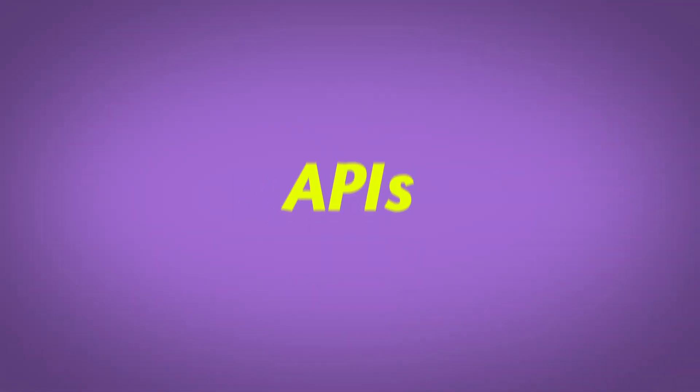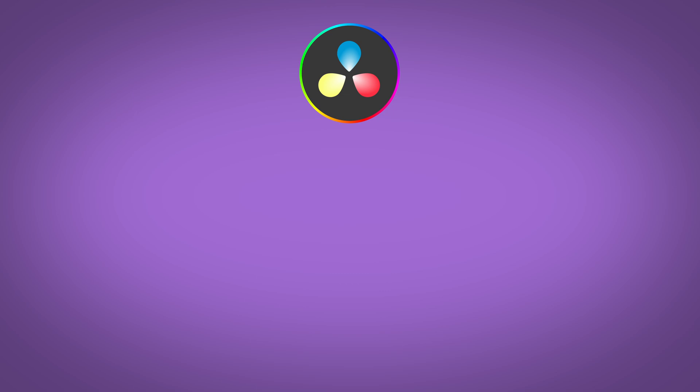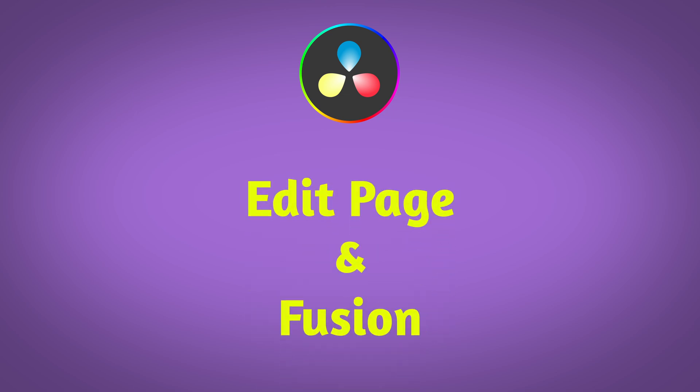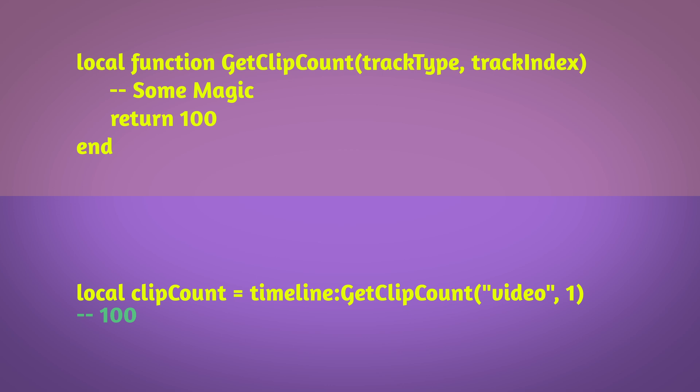What about APIs? An API is essentially just a way for you to connect to a website or software. In our case, DaVinci Resolve allows you to connect to it to do various tasks like things on the edit page, in Fusion, and other things. You use a function the creator of the software gives you, pass in data like numbers, strings, or booleans, and it will perform tasks that you couldn't do with raw Lua code alone.